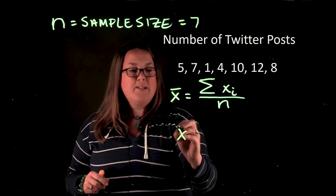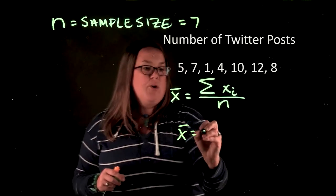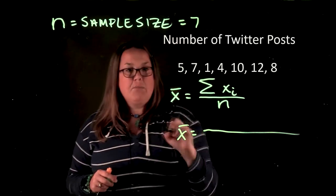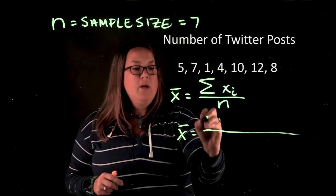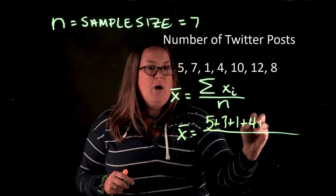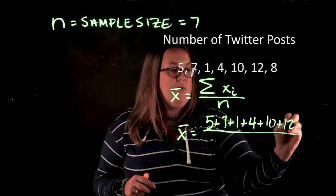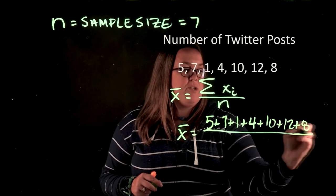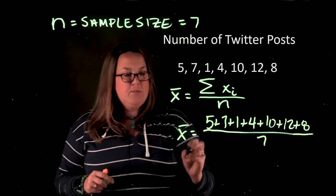So when we calculate X bar, the numerator is going to be adding—that's what that sigma means, it adds everything behind it—we're going to be adding all of those up. So we have five plus seven plus one plus four plus ten plus twelve plus eight, and we divide that by the number of observations which is seven.